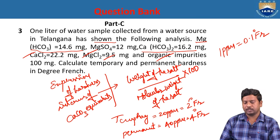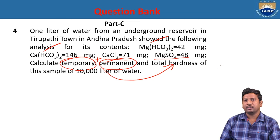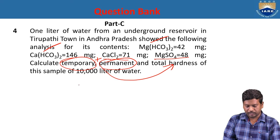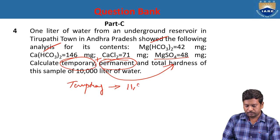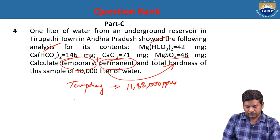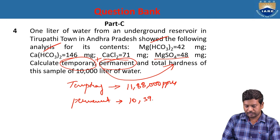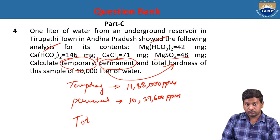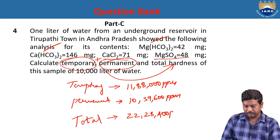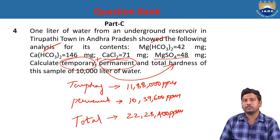Using the formula: (weight of salt / molecular weight of salt) × 100, for 10,000 liters of water — temporary hardness = 11,88,000 ppm, permanent hardness = 11,88,000 ppm, and total hardness = 22,28,400 ppm.